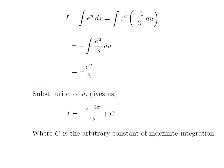We had solved the integration in terms of u. Now we need to take back the expression in terms of x. For that, I have replaced u by minus 3x, which we had assumed earlier. So the integral of exponential of minus 3x is equal to minus e to the power minus 3x divided by 3. Then we add capital C, which is the arbitrary constant of indefinite integration. Do not forget to add this constant at the end of any indefinite integration.